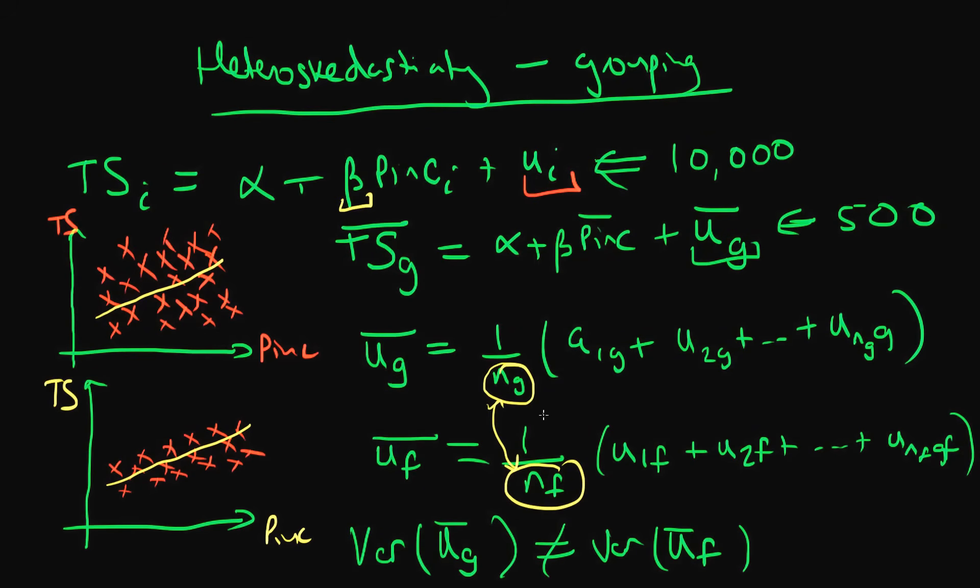If the groups are made of different numbers of individuals, that means that the variance of errors in both of these groups is going to be different, which means that the variance of our errors is not equal to some constant sigma squared.